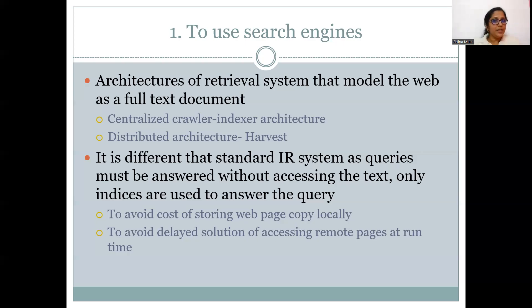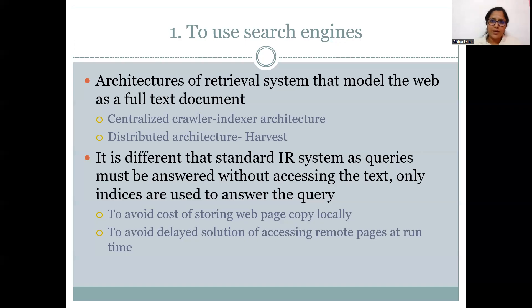Web scraping is different from web crawling. In web scraping, whatever source code is fetched from a web page, the data giving business insights is extracted from it and used for gaining insights — indexing is not applied in scraping. But in web crawling, indices are generated from the fetched data, which are used later for retrieval and matching purposes.